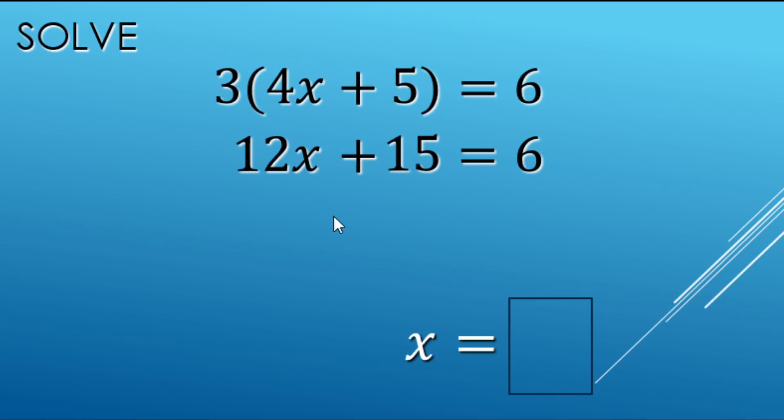We're going to start by undoing the plus 15 being done to the x here with a minus 15 to both sides of the equal sign.